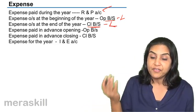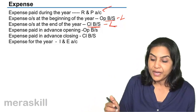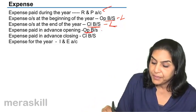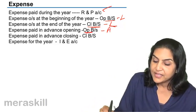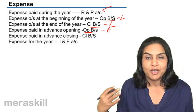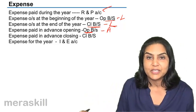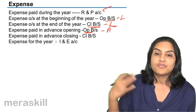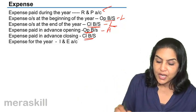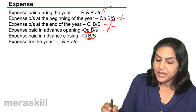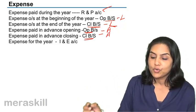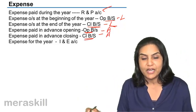Expense which is paid in advance at the opening will appear in the opening balance sheet, and this is an asset because it is a prepaid expense — we have paid the expense and services are still receivable. Closing expense paid in advance is again an asset but goes to the closing balance sheet.